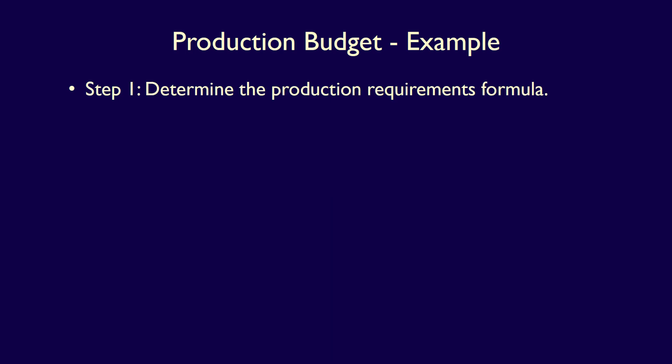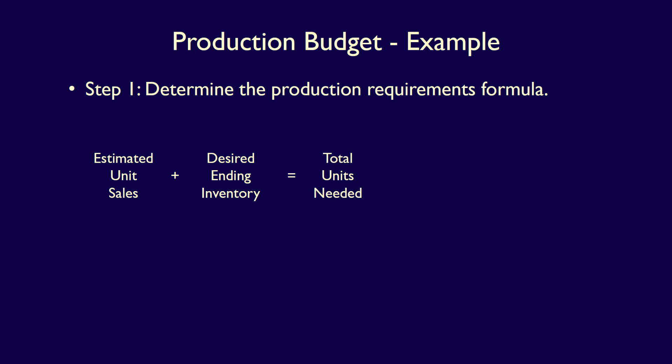Step 1 is to determine the production requirements formula. We start with the number of units we expect to sell in the current period, which is the estimated unit sales. We add in the safety stock, called the desired ending inventory, that we need on hand to meet unusual demand requirements. Estimated unit sales plus the desired ending inventory equals the total units needed for the period. From that, we deduct the beginning inventory in units to determine the number of units we must produce to meet our sales and safety stock needs.